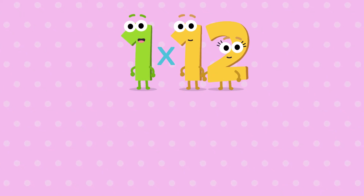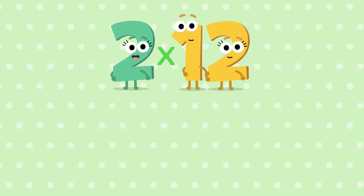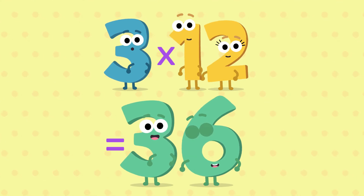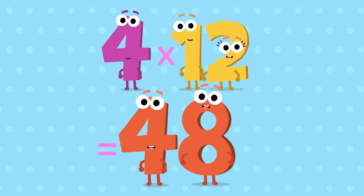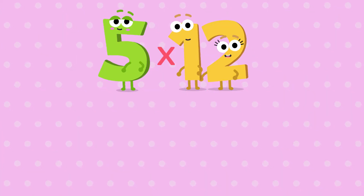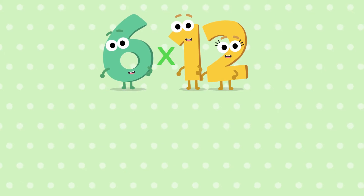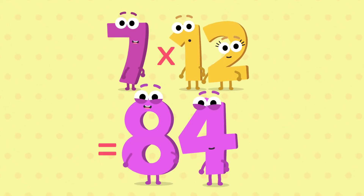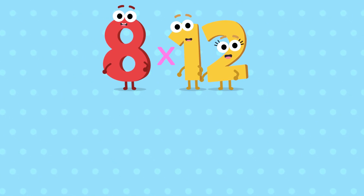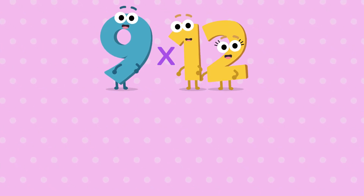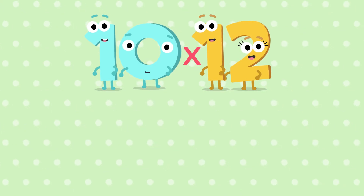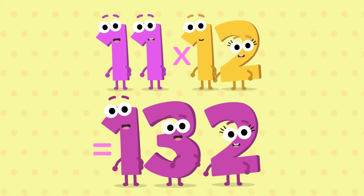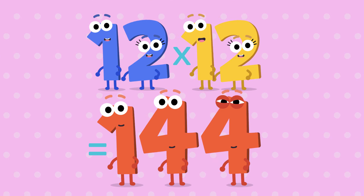1 12 is 12, 2 12's are 24, 3 12's are 36, 4 12's are 48, 5 12's are 60, 6 12's are 72, 7 12's are 84, 8 12's are 96, 9 12's are 108, 10 12's are 120, 11 12's are 132, 12 12's are 144.